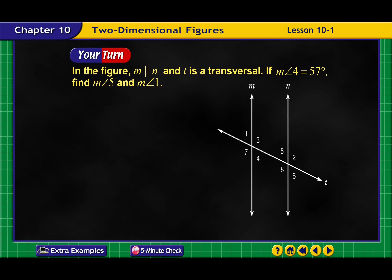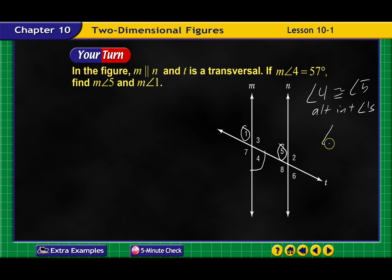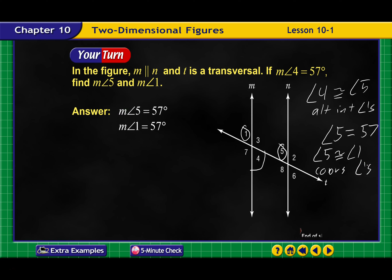In the next figure, the parallel lines are cut by a transversal. If angle 4 is 57 degrees, find the measure of angle 5 and of angle 1. Angle 4 is congruent to angle 5 because of alternate interior angles, so angle 5 equals 57. And angle 5 and angle 1 are congruent because they are corresponding angles, so both are 57 degrees.